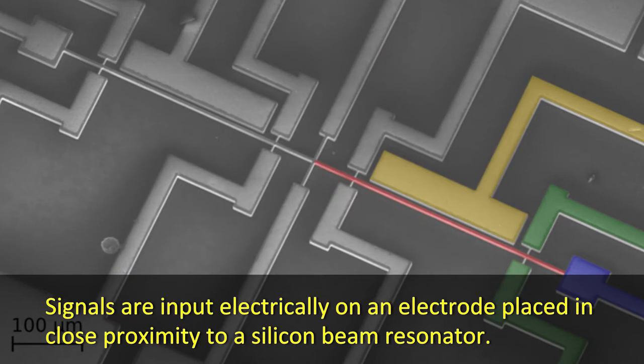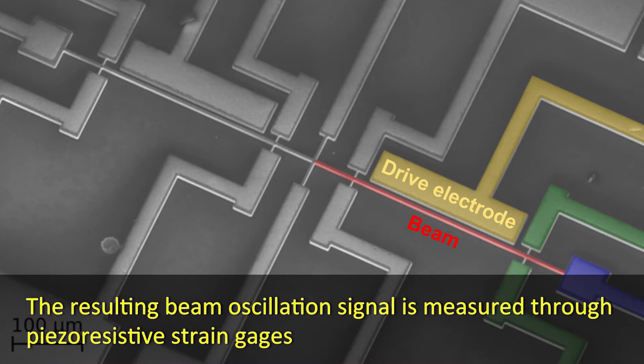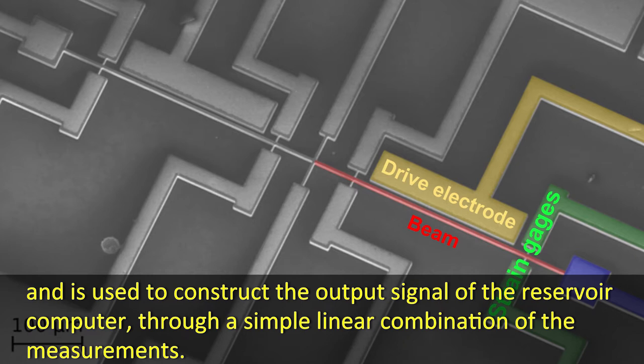Signals are input electrically on an electrode placed in close proximity to a silicon beam resonator. Varying the strength of the electric field between the beam and its driving electrode causes a nonlinear variation of the beam oscillation amplitude. The resulting beam oscillation signal is measured through piezoresistive strain gauges and is used to construct the output signal of the reservoir computer, through a simple linear combination of the measurements.